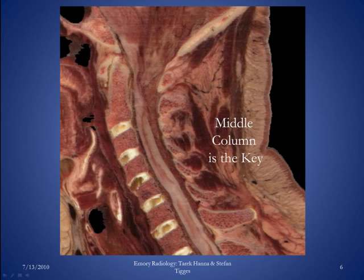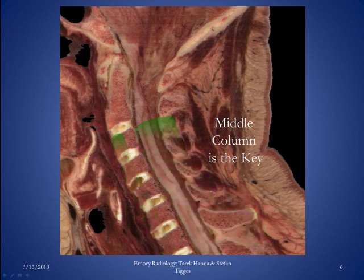The anterior column, shown in green, involves the anterior longitudinal ligament and the anterior one-half of the vertebral bodies. The posterior column, also in green, involves everything posterior to the posterior longitudinal ligament — including the pedicles, lamina, spinous processes, and all the ligaments that attach them. Removing those two columns, the middle column involves the posterior half of the vertebral bodies as well as the posterior longitudinal ligament. Again, if two of these columns are affected, you have an unstable fracture; if only one column is affected, the fracture is stable.